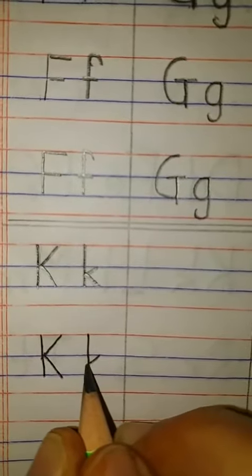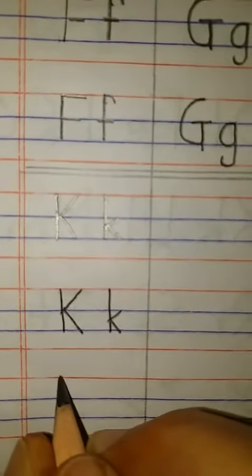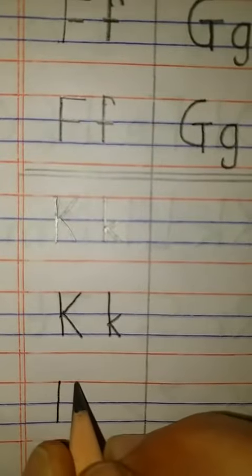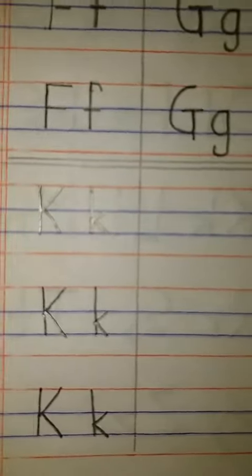And then draw two slanting lines between two blue lines. Again, for capital K, this is capital K. And this is small k.